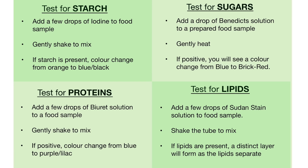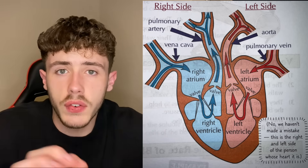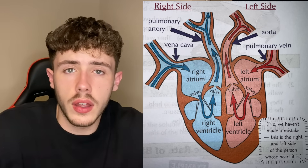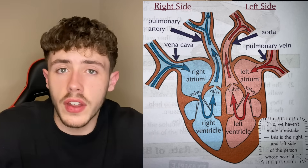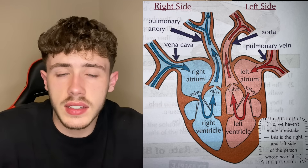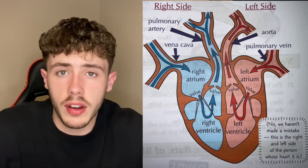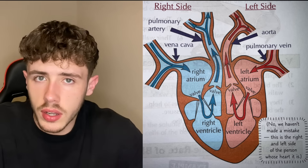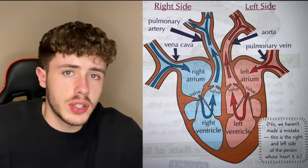Moving away from the digestive system, we have the different food tests that you need to know. Next we have the circulatory system, which is the heart and the blood. Your heart has four chambers: the left and right atriums and the left and right ventricles. Within this there are four connecting blood vessels, as you can see in the diagram. It is important to note that the left side is actually the right side and the right side is actually the left side.